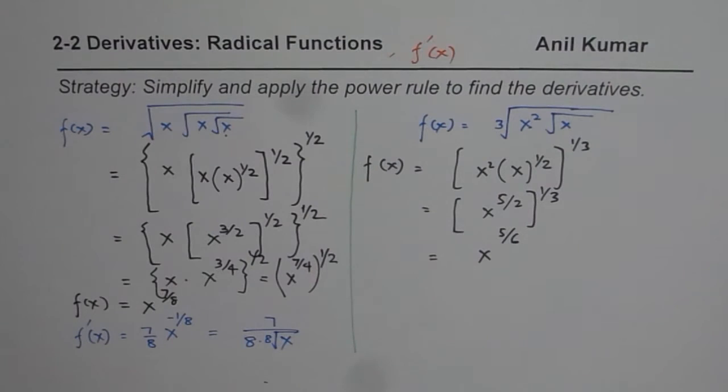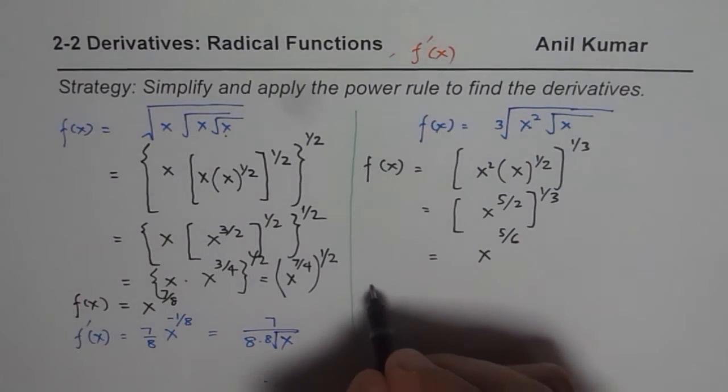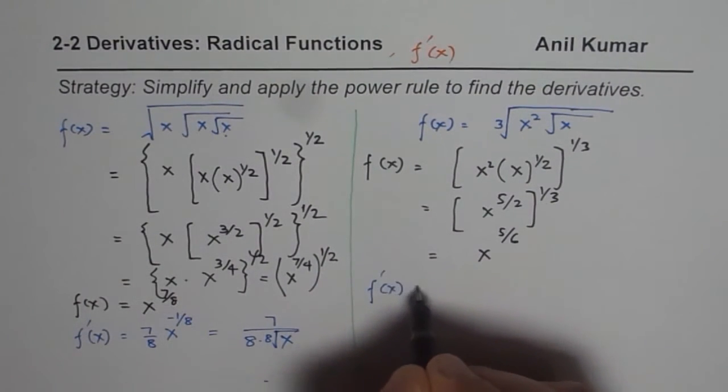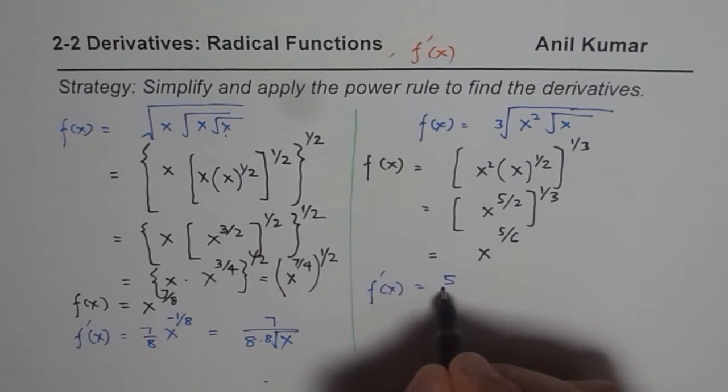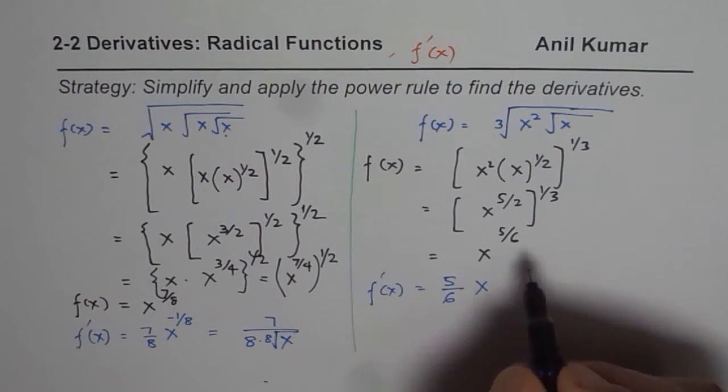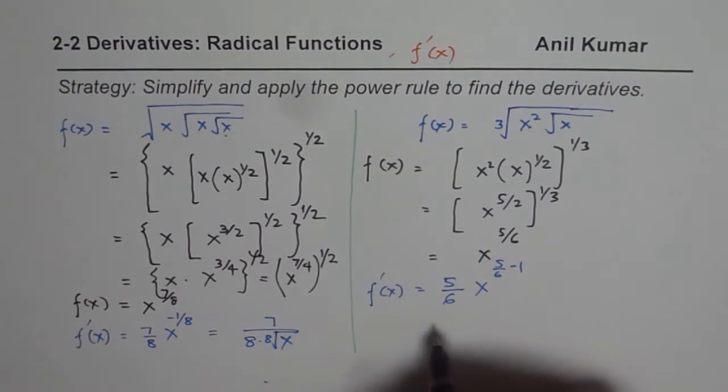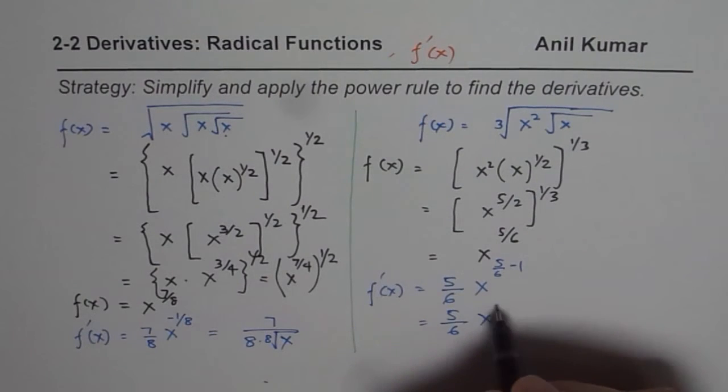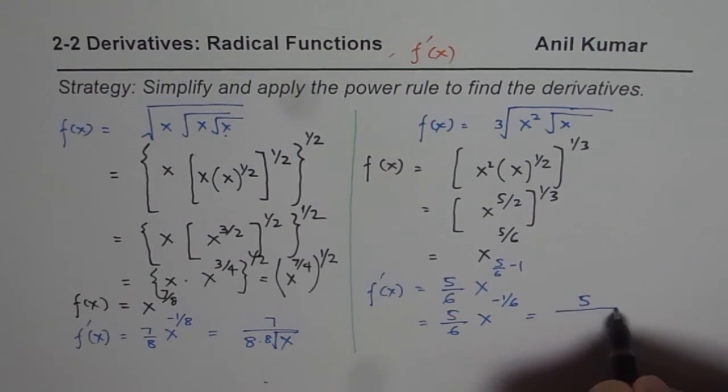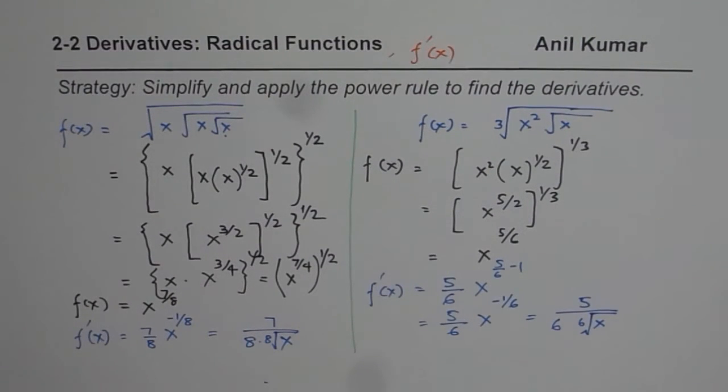So what is the derivative? The derivative is applying the power rule. So f dash x is equals to 5 over 6 of x to the power of 5 over 6 minus 1, which you know is equals to 5 over 6 x to the power of minus 1 over 6 or 5 over 6 and then we have the sixth root of x in the denominator.